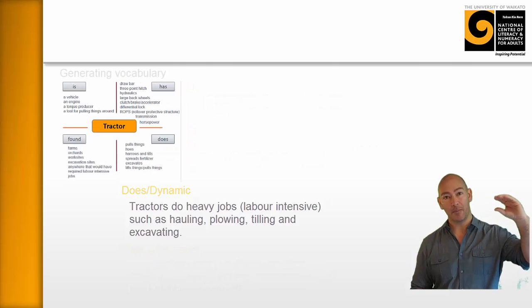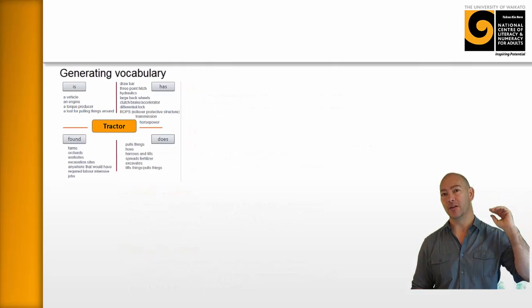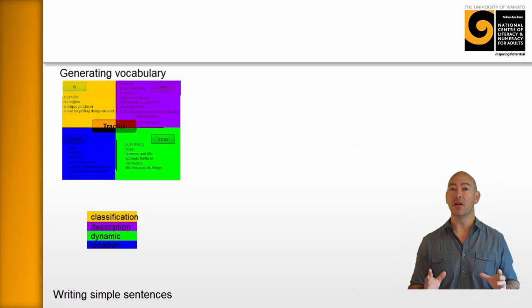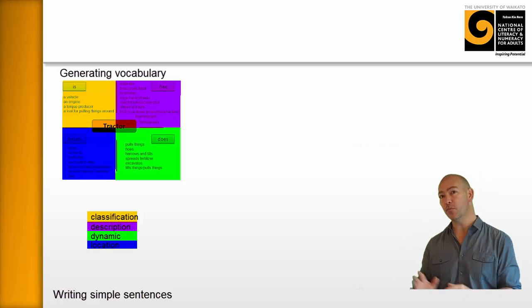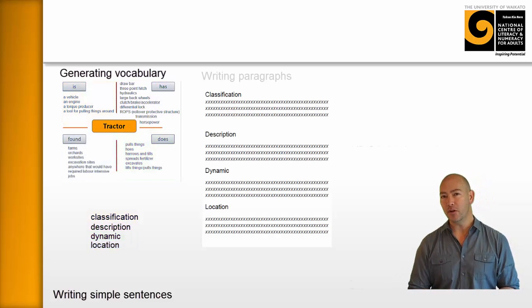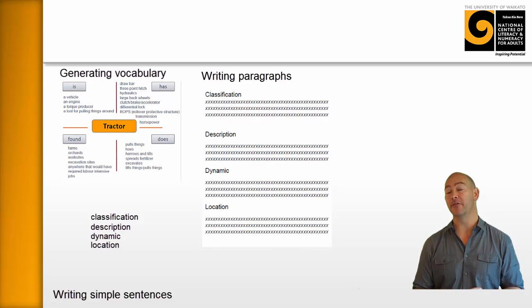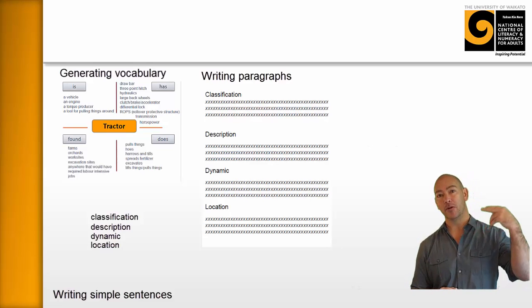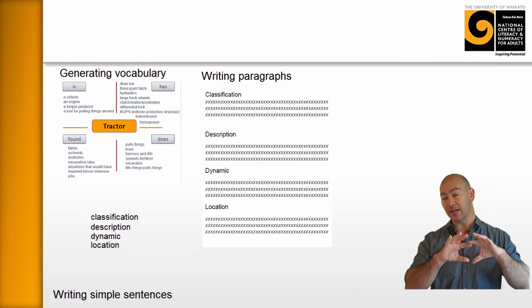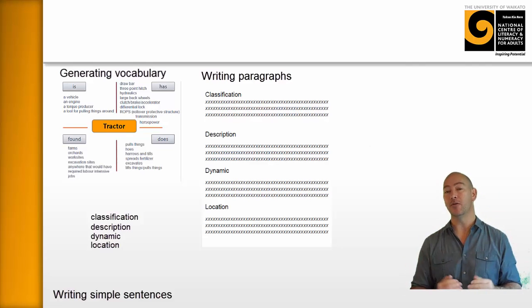So I have a couple of sentences eventually around what a tractor is, what it has, what it does, and where it's found. And what I really like to do is over the course of the program, maybe it's two weeks where we're looking at tractors on and off. I would want them each to write a paragraph. So there'll be a paragraph around where a tractor or what a tractor is, what it has, what it does, and where it's found and so on. And they'll continue to work on that paragraph as we go on.